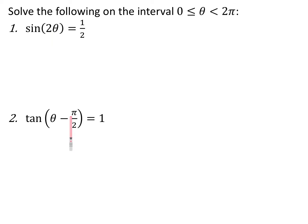For problems with something attached to theta on the inside, the first step is still to isolate the trig function. But a coefficient attached to theta — like this two — means the trig function is moving twice as fast, and we have to compensate. So the first thing to do is adjust the given domain to match what's inside the trig function. Because theta is multiplied by two, multiply each piece of the interval by two: zero times two is zero, and two pi times two is four pi. So instead of solving between zero and two pi, solve between zero and four pi.